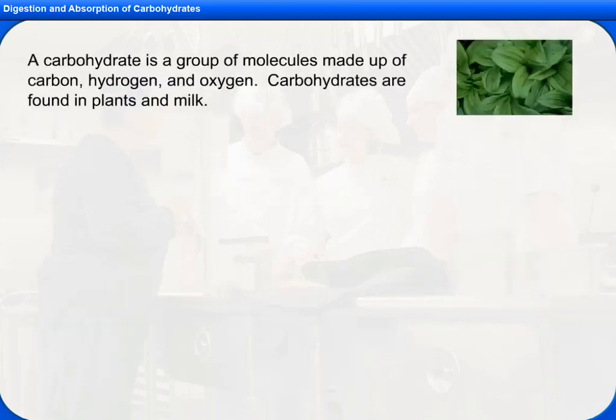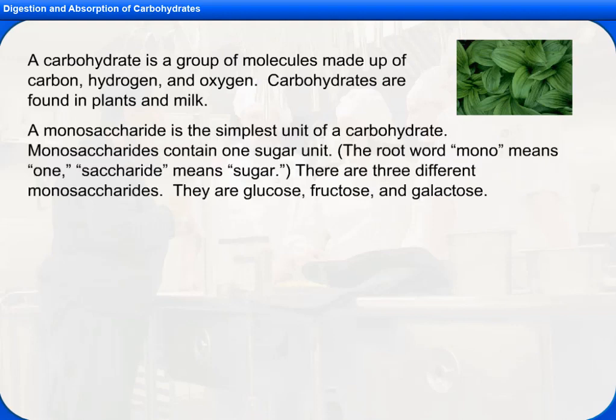A carbohydrate is a group of molecules made up of carbon, hydrogen, and oxygen. Carbohydrates are found in plants and milk. A monosaccharide is the simplest unit of a carbohydrate. Monosaccharides contain one sugar unit. The root word mono means one and saccharide means sugar.